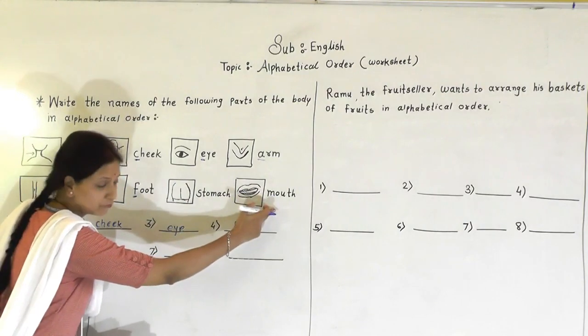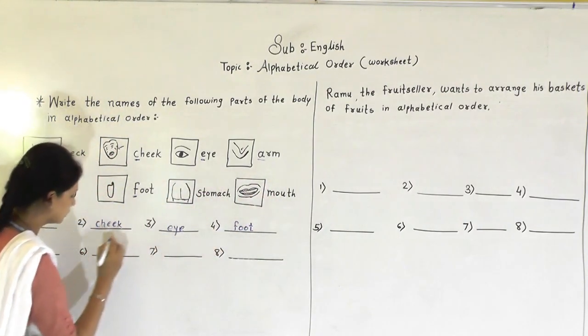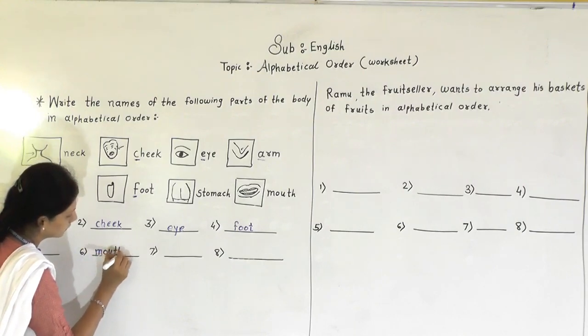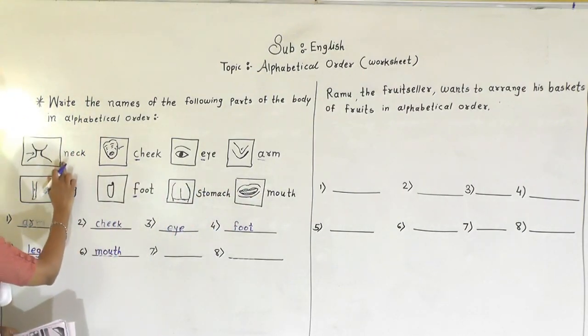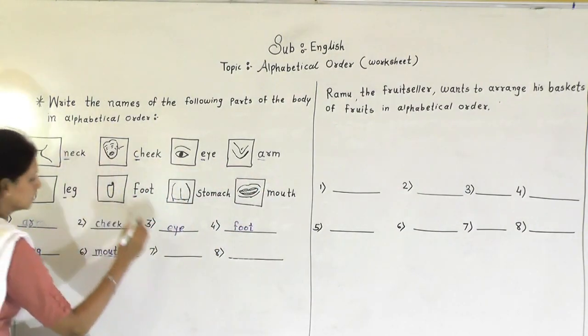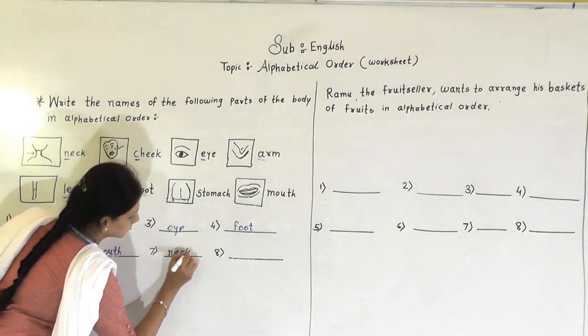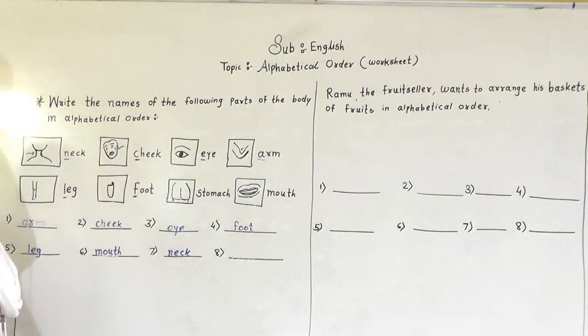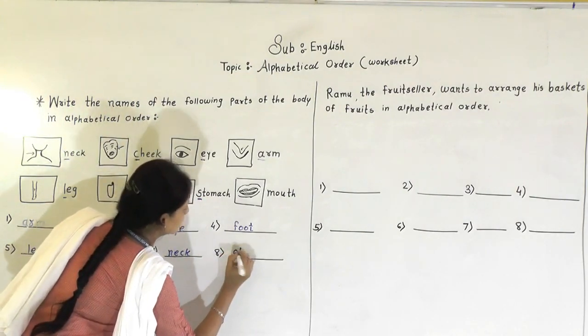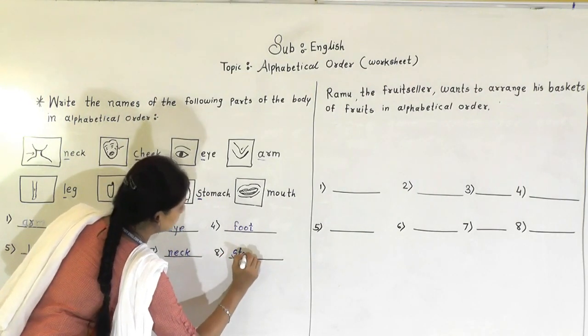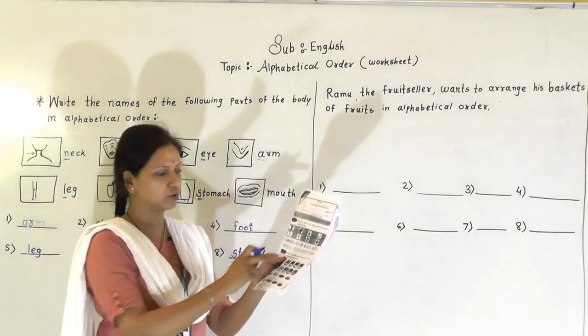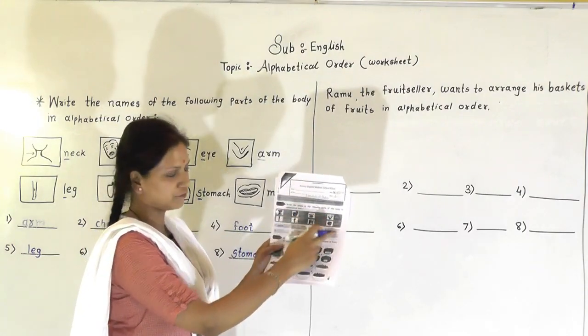Then M, after L which letter comes M. So mouth. Immediately I got N because after M, N comes. So N, neck. And which is remain now? S. Exactly. So here you write down the last word is stomach. S. The word start with the S letter.